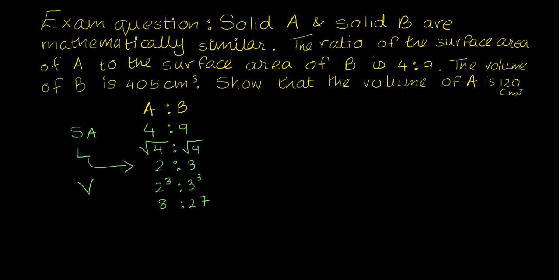Okay, so we know that the volume of B is 405 centimeter cubed. So that's the bigger shape. And I do not know the volume of A and I need to work it out. So what I'm going to do is, on the side, I'm going to divide 405 by 27, and this answer is 15. 405 divided by 27 is 15.